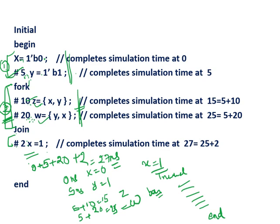Fork and join is not synthesizable, so we do not include this parallel block in our logic design. However, it is a useful construct for checking the functionality of a design — that is, while writing the test bench, you can use fork and join.